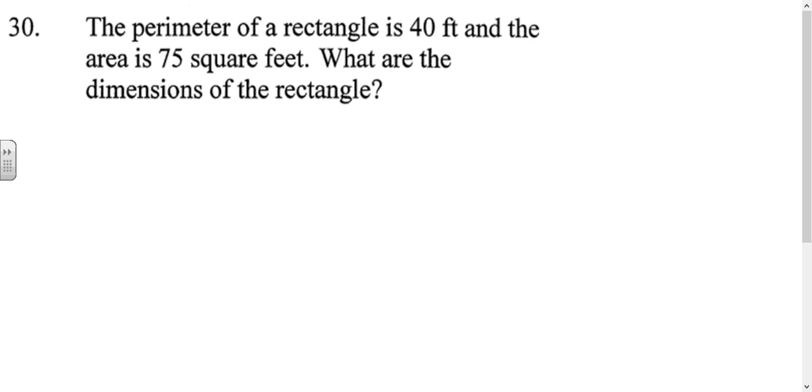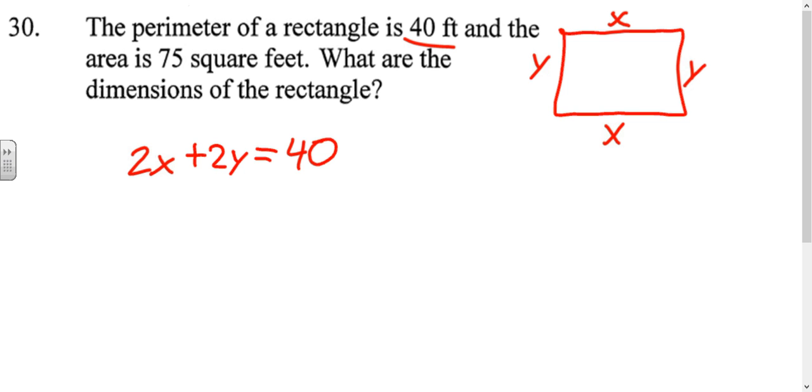So for this problem, I would start by drawing a rectangle. It says that the perimeter is 40 and the area is 75 to find the dimensions. So if we call the dimensions x and y, then our perimeter will be x plus x, which is 2x, and y plus y, which is 2y, that's our perimeter, which equals 40. And for area, you would multiply length times width, so x times y.